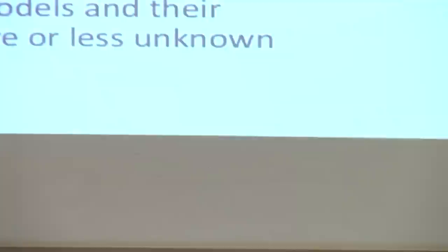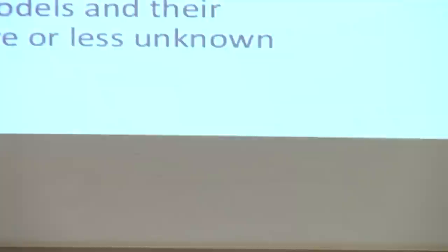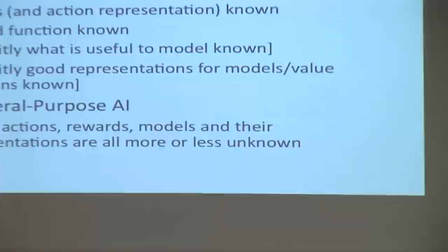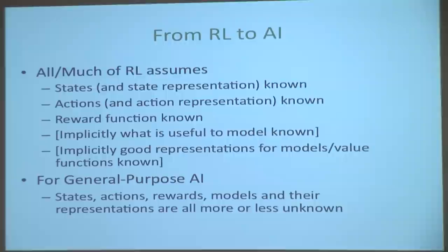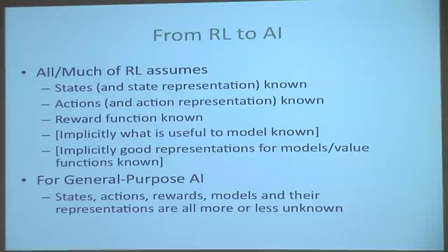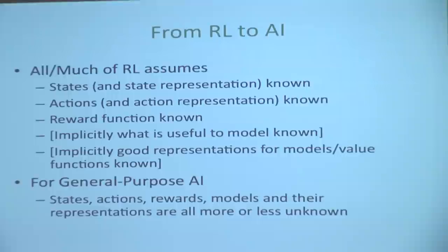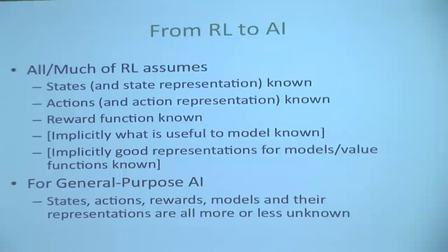Let me anticipate something I'll do tomorrow, in the more advanced topics. Today I'm going to focus on the classic RL problem: states are given, actions are given, reward functions are known. When you think about general purpose AI, which is where my interests primarily lie these days, all of these things need to be learned. So the bulk of what I'll talk about tomorrow will be how to deal with these sorts of issues. But today I'm going to assume these things are known and available.